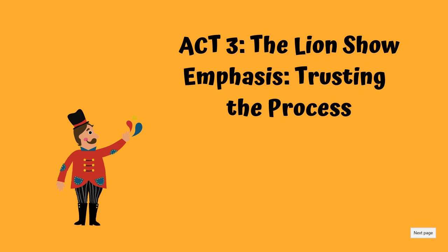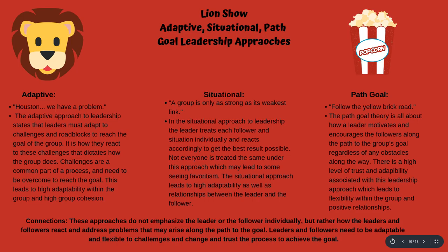Act three is the lion show, with the emphasis on trusting the process. I couldn't boil this down to one word, so I went with 'trusting the process.' The three theories here are adaptive, situational, and path-goal. They're all fairly similar — you have a goal you want to reach, but along the way there are going to be obstacles, and it's how the leader and followers adapt and react to those obstacles that makes the difference in achieving the goal.